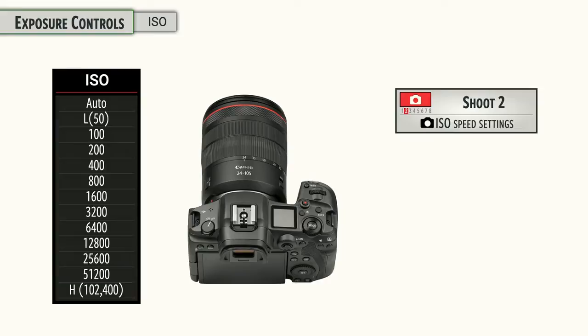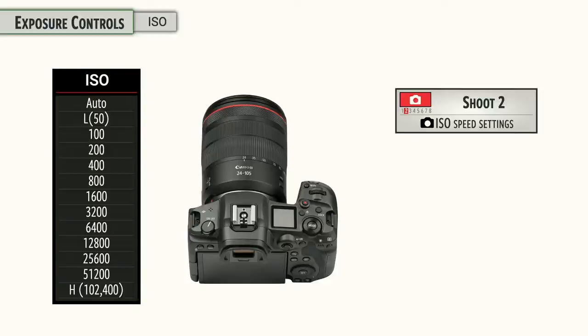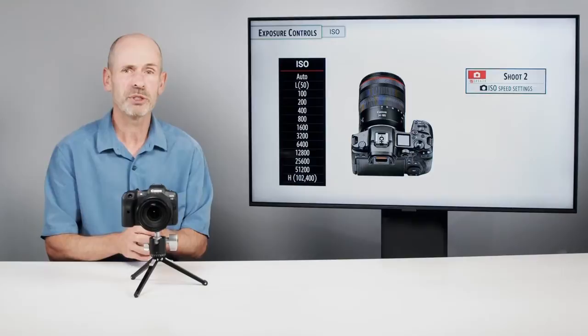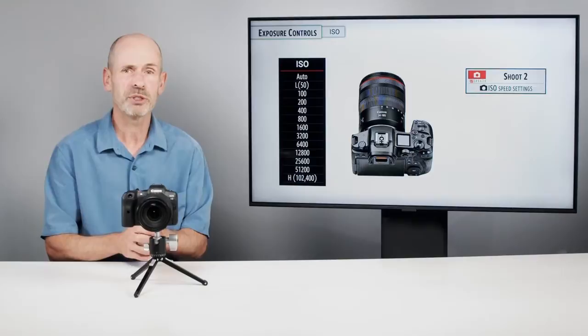If you want to dive into the menu under ISO Speed Settings, there are additional controls over the ISO. You can extend the range upward to a high 100,000 setting, set up the auto range, and set the minimum shutter speed. We'll talk about all of that when we get to the menu settings.